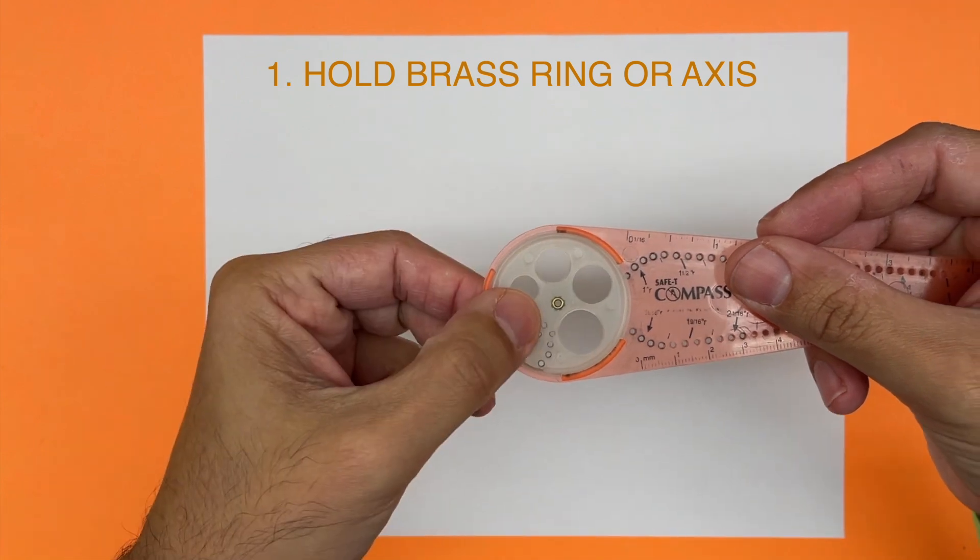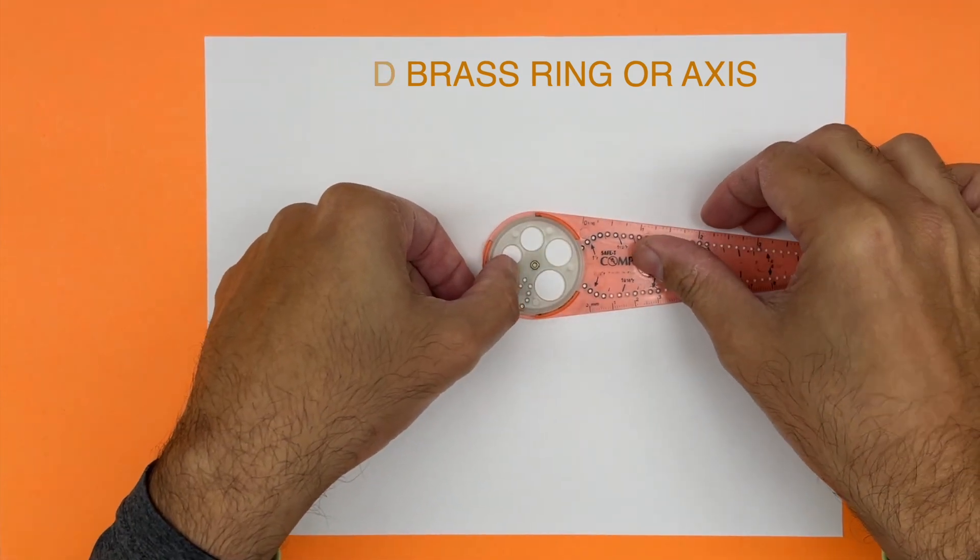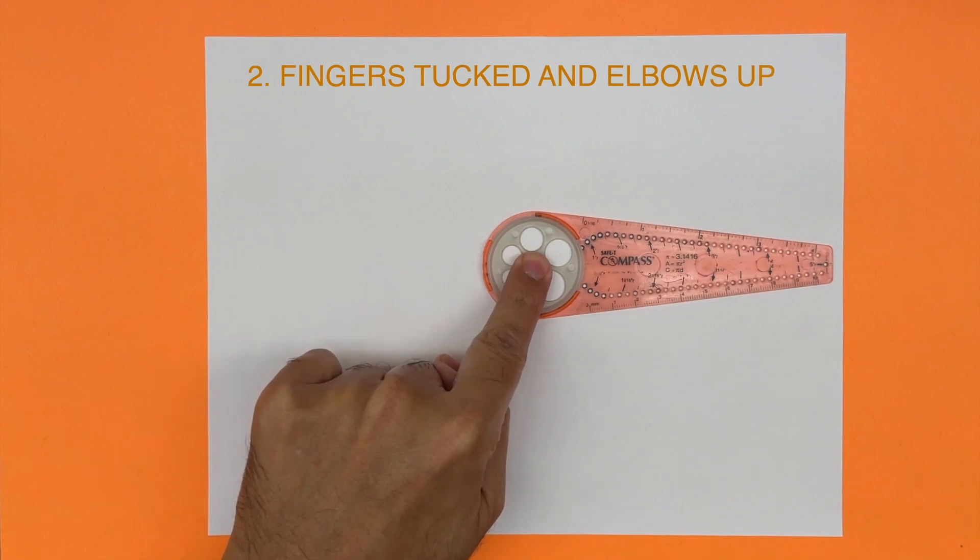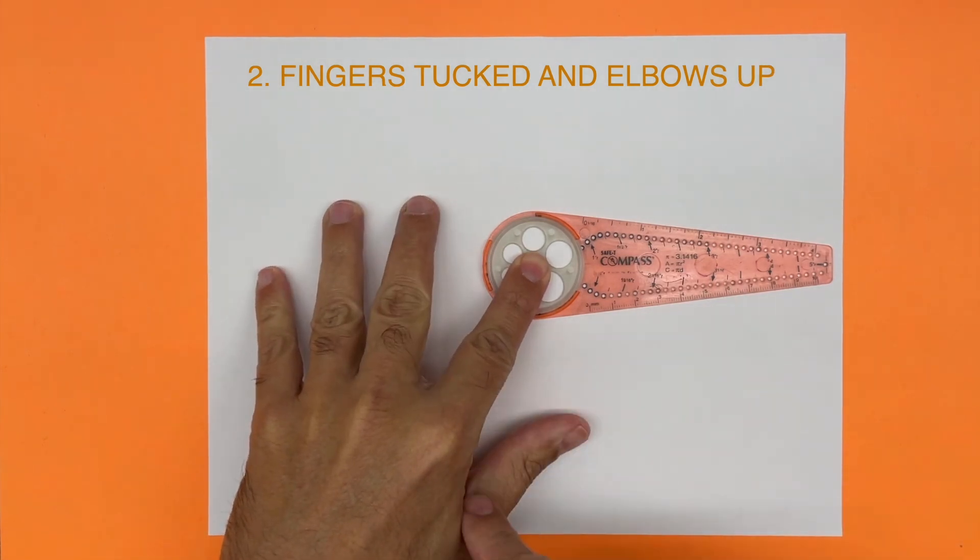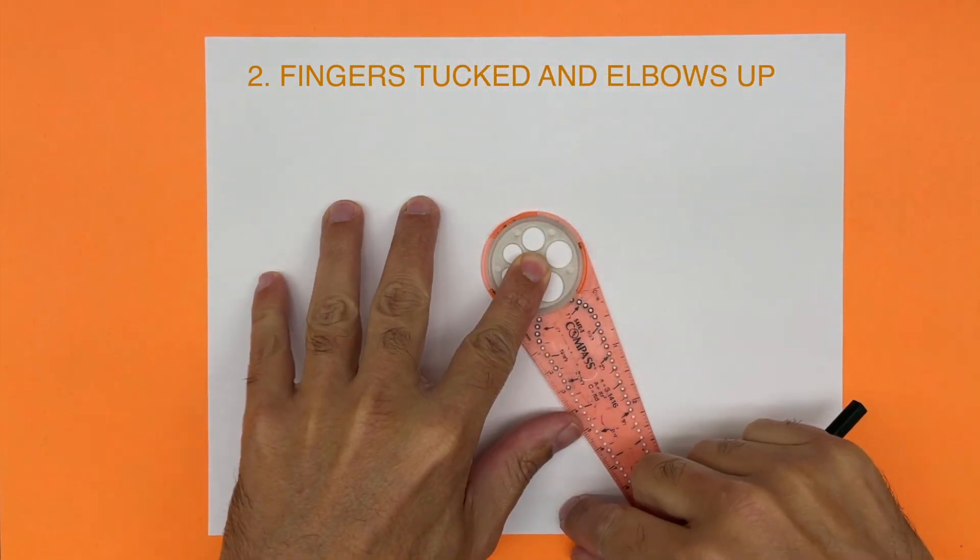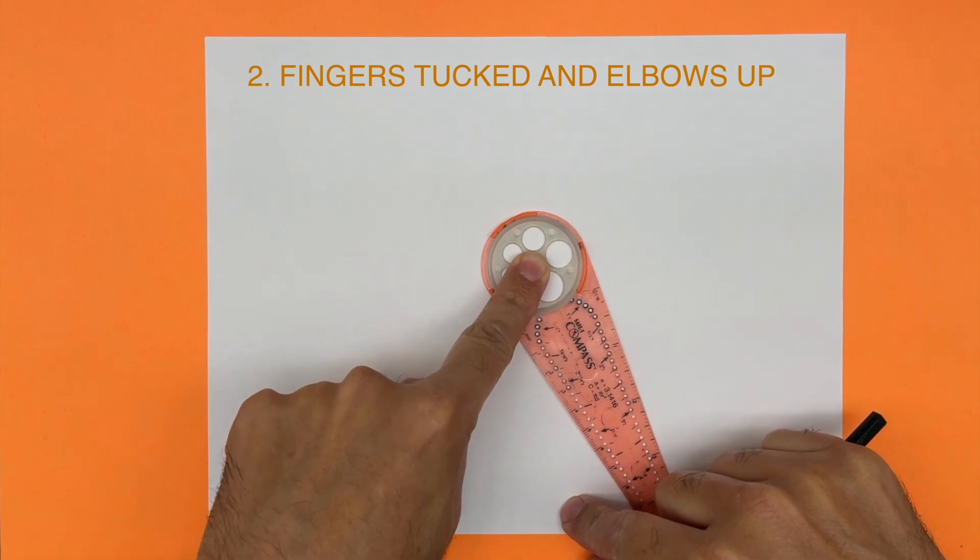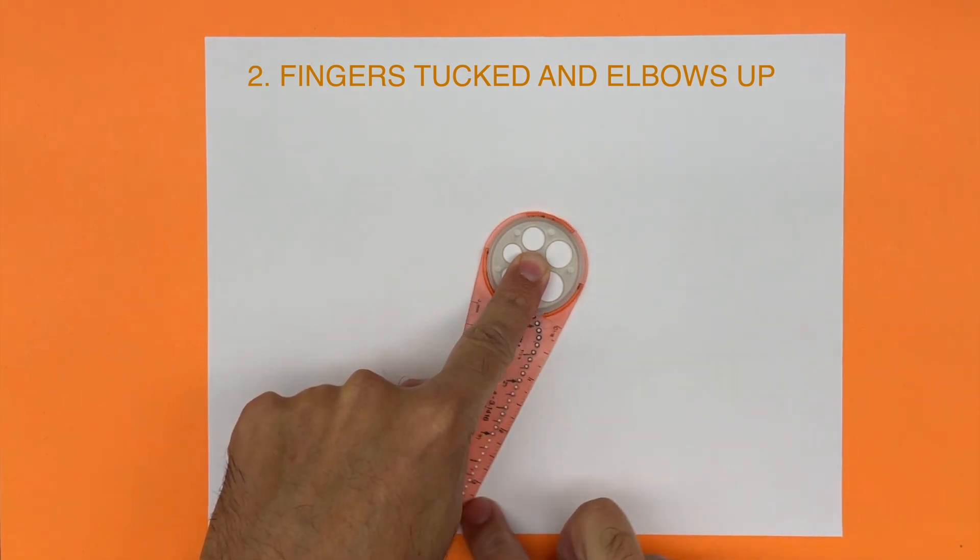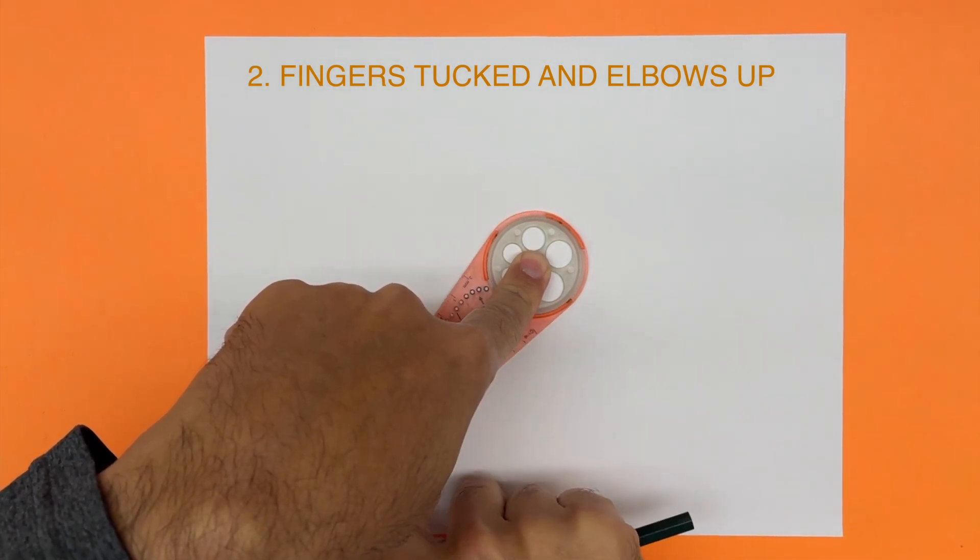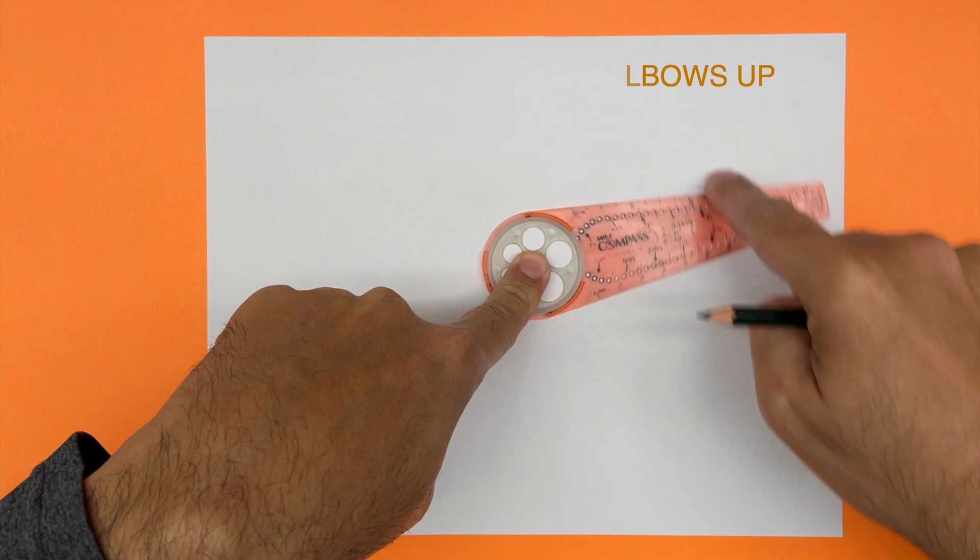Two: when you hold the brass ring, your fingers need to be totally tucked in so when you spin it on the axis it doesn't get blocked. So tuck them in. And also, so it goes through your palm, you want to lift up your palm and your elbow so it fits through.